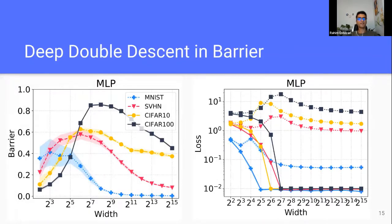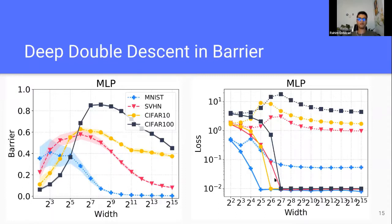We already observed deep double descent in loss, and now we see the same phenomena for the barrier. On the right you can see the traditional deep double descent on the loss; on the left, that's for the barrier size. If you look carefully, you can match the points where the deep double descent occurs on the loss landscape — around C400 to the power of seven is the critical point, and the same holds for barrier size. The barrier size here is in training error, reflecting the height of the training loss landscape.